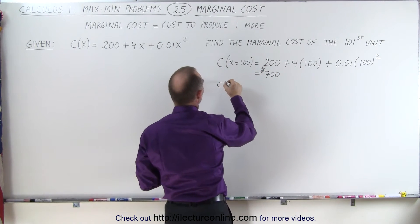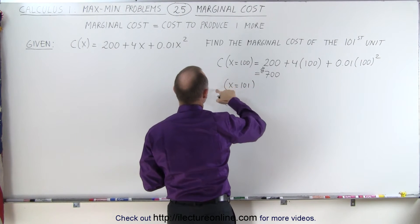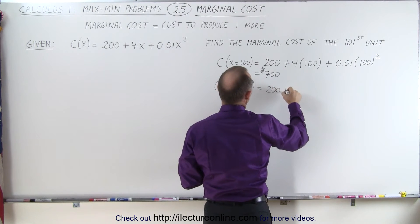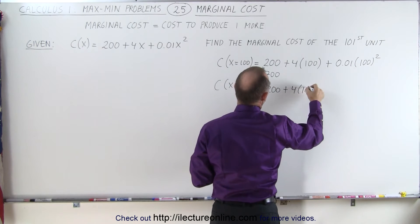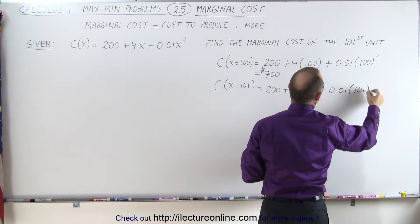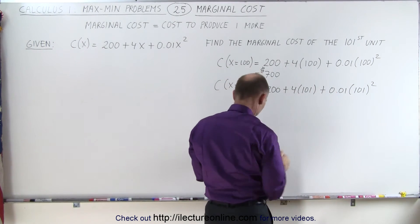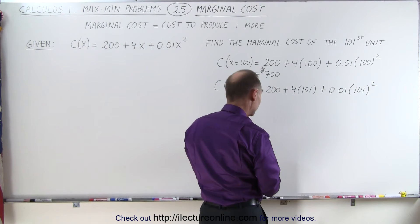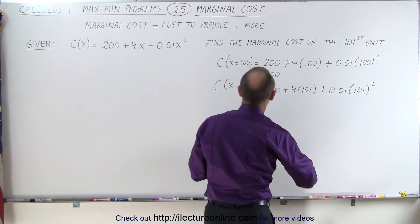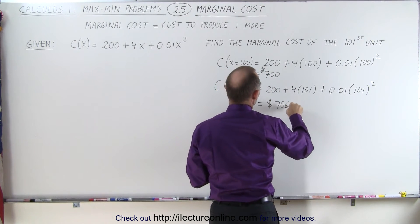Now the cost to produce 101 units — that's a capital C — is equal to 200, the fixed cost, plus 4 times 101, plus 0.01 times 101 squared. This would be an additional $4 plus whatever that gives us; 101 squared gives an additional $2.01. So this would be equal to $706.01.